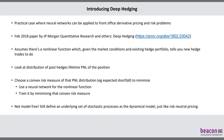Deep hedging is an interesting technique using neural networks applied to front office derivatives pricing and risk problems. It's the first case I know of that practically applies complex machine learning algorithms in that space — as opposed to electronic trading or fraud detection. It was introduced in a February 2018 paper by Hans Buehler in JP Morgan's quantitative research group and some of his colleagues in academia. It's really quite an elegant paper.